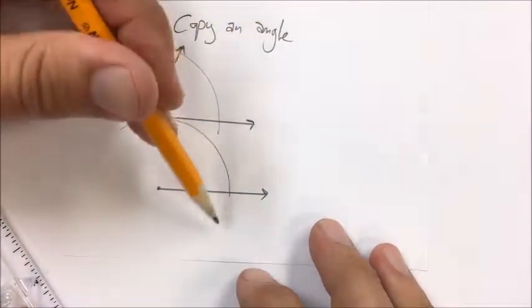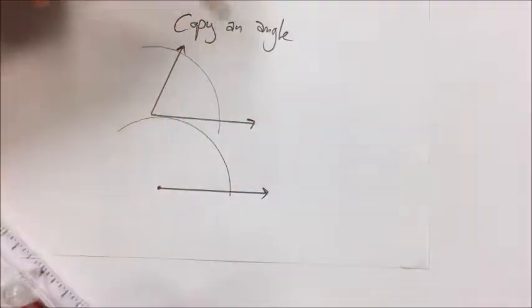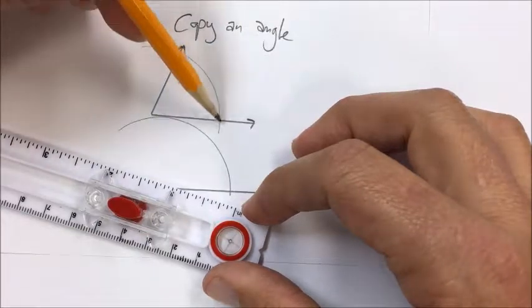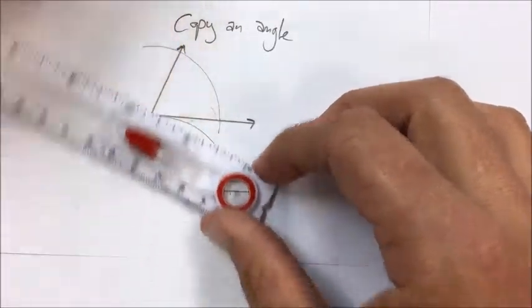So notice this and this are the same, that and that are the same. Next thing I'm going to do is I'm going to measure this distance across here with my compass and arc it up here. That'll tell me where they intersect.